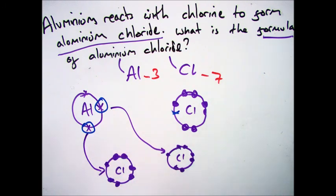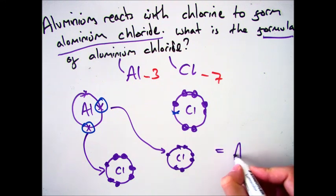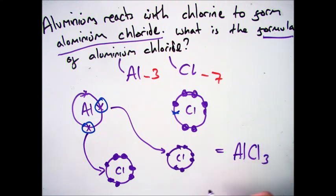So I need to have three chlorines for every aluminum atom when making aluminum chloride. So how can I turn this into the actual formula? It's nice and simple, one aluminum, three chlorines, which gives me AlCl3.